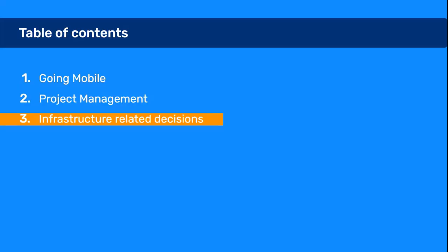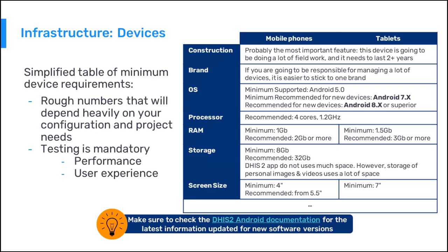In this last part, we talk about infrastructure-related decisions. Specifications for mobile devices to use on a DHIS2 Android application deployment are included in the displayed table. Note that these recommendations can be very generic, as the performance of the device will be highly impacted by the configuration and other factors. It is recommended to use a well-known brand in terms of updates and support in case of device failures. Use different devices to test the configuration and keep the ones that best suit your case in terms of performance and user experience.